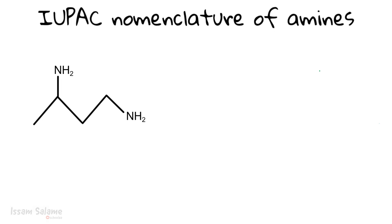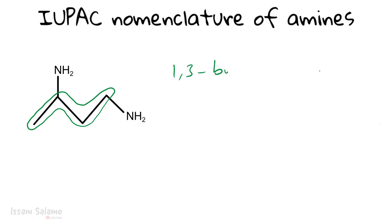How do we name a structure that has two amino groups? As usual, we look for the longest chain. If we start numbering from the left, the amino groups are at carbons two and four. If we start from the right, they are at carbons one and three — which gives lower locants, so we start from the right. The name is 1,3-butanediamine.